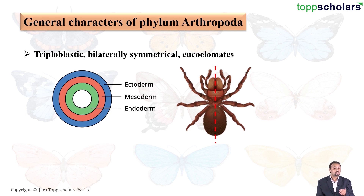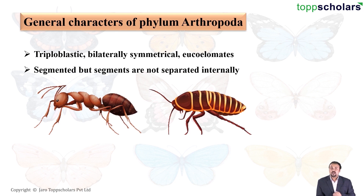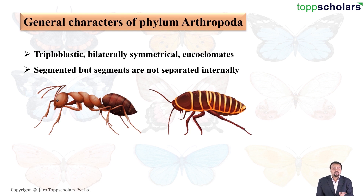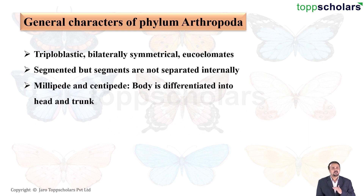Moving on, arthropods have segments present both externally and internally. This type of segmentation is called metameric segmentation, and the segments are referred to as metameres. Pay attention to the image of the ant — the body is divided into three parts: the head, the thorax (itself divided into three parts), and the abdomen. The same can be seen in the cockroach.